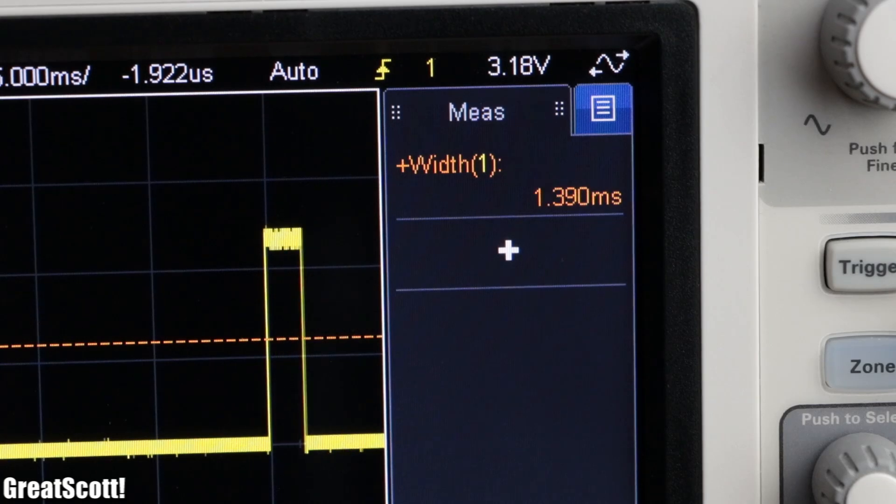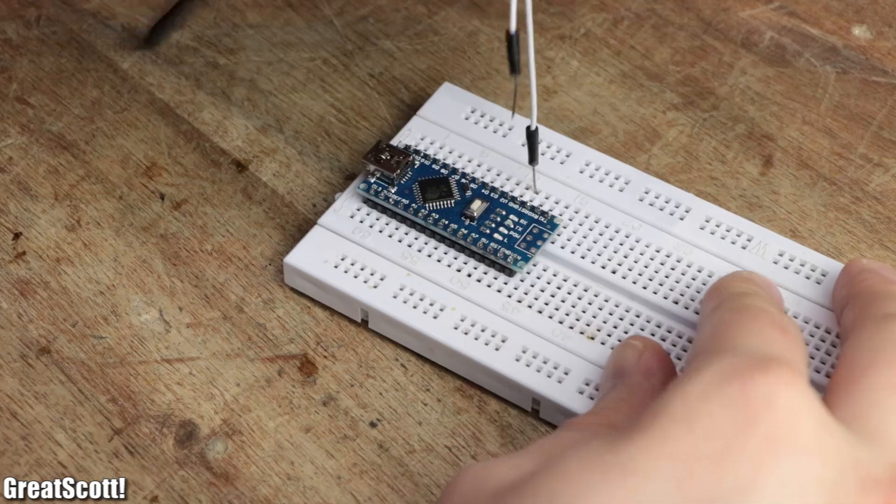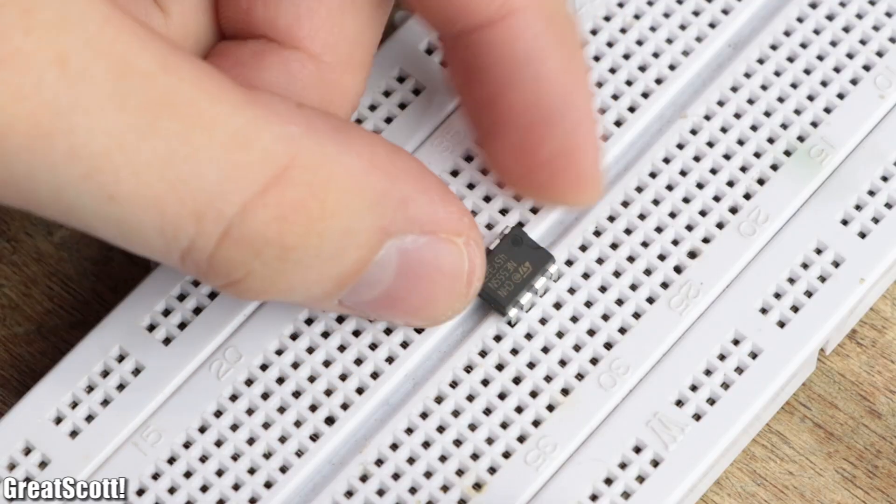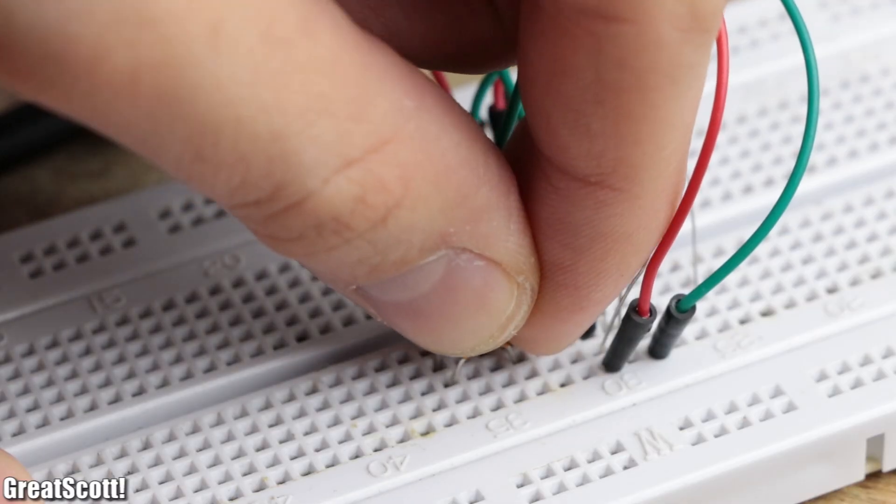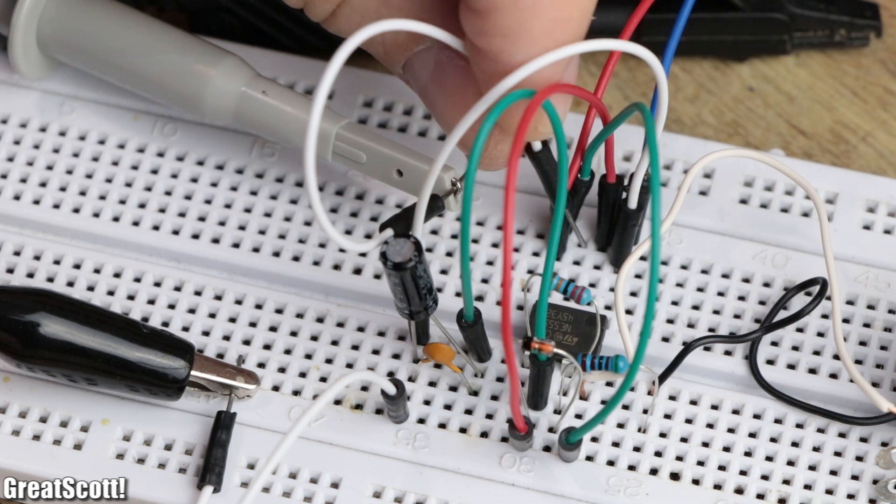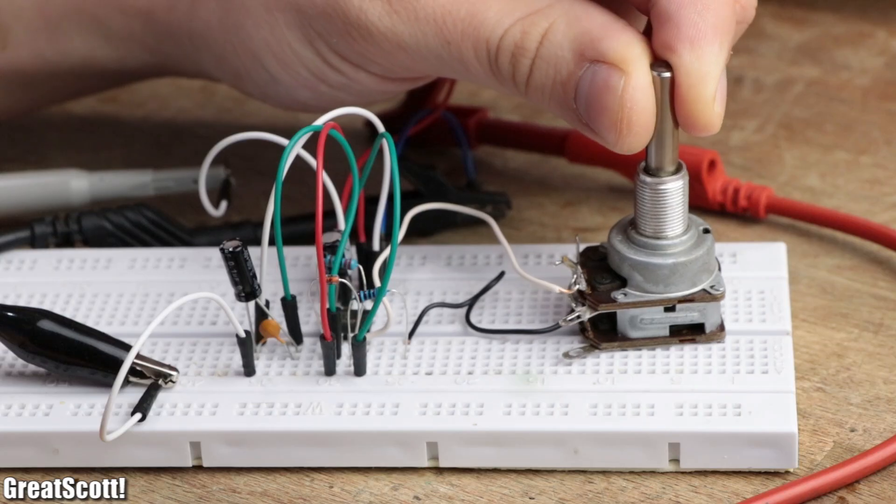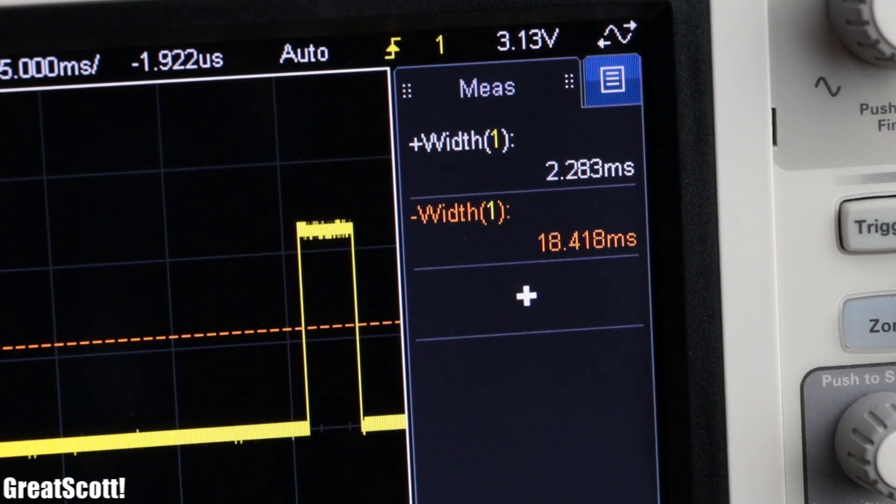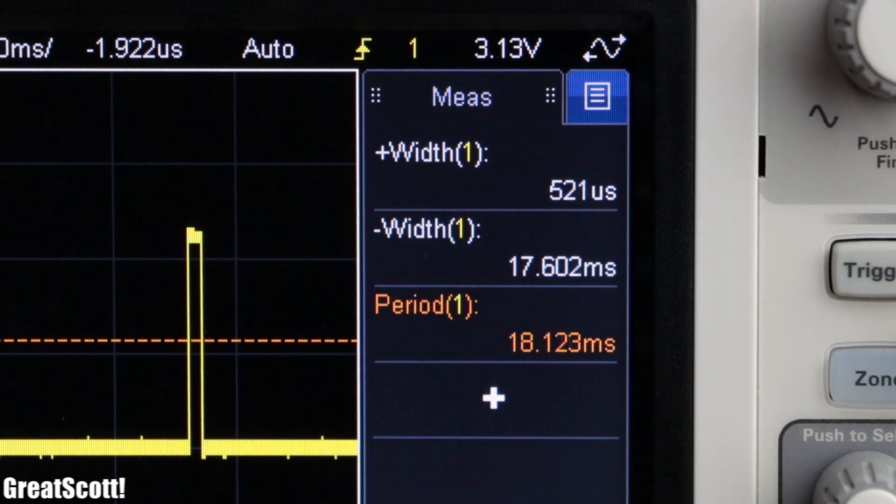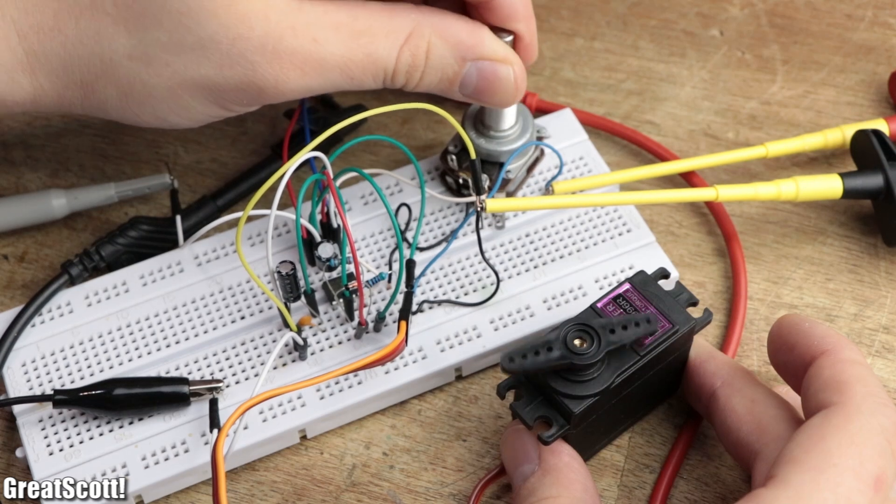But we don't necessarily need an Arduino to achieve this functionality. A simple 555 timer IC with 2 resistors, 1 diode, 2 capacitors and a potentiometer in this constellation can create the PWM signal as well. The on time varies between 0.5 to 2.45ms according to the position of the potentiometer, and the off time is around 17.5 to 18.5ms. This way the generated signal may not have a constant periodic time of 20ms, but the servo does not really care about such small details and works just like we intended it.